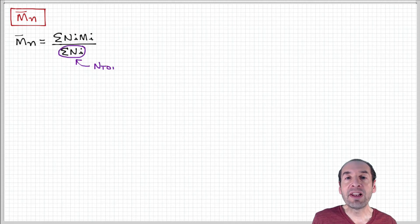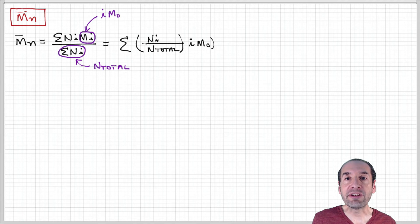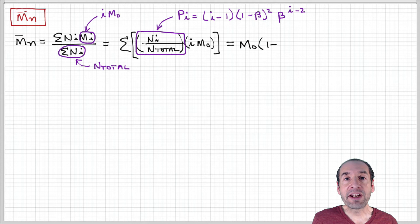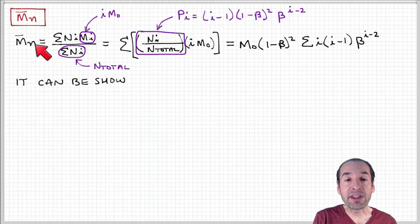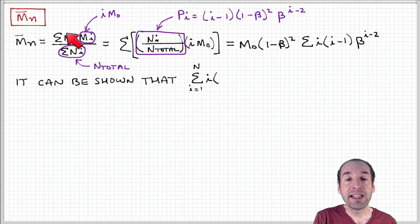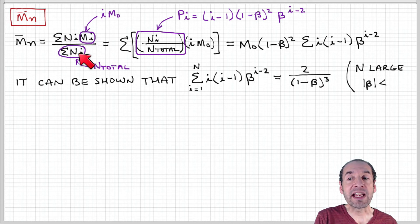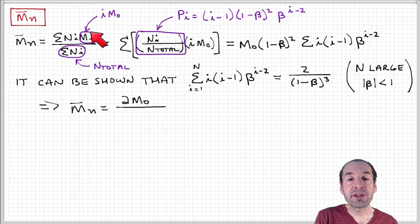Now, let's see how we can apply this to determine the number average molecular weight of a sample that was prepared in free radical polymerization with combination termination. So remember that the number average molecular weight is the sum of the n-i-mi over the sum of the n-i. So let's take a look at this more closely.